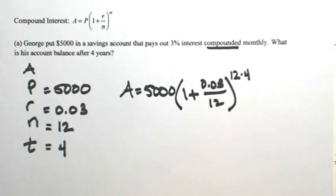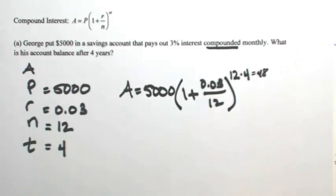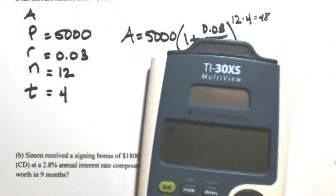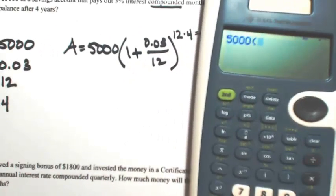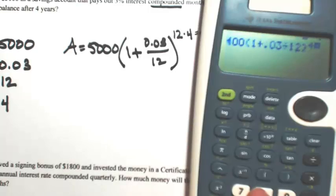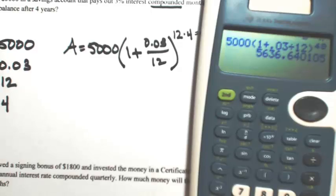So then at this point, we're just going to go into the calculator. I'm going to write 12 times 4 is 48. I'll just make that easier in the calculator. So just type it exactly how you see it, so 5,000, open parentheses, 1 plus .03 divided by 12, close parentheses, raise it to the exponent of 48. So when I hit enter, this is going to be the balance at the end of 4 years, so $5,636.64.